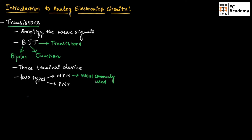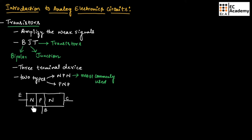If we consider the structure of a transistor, it consists of three regions. It can be NPN or PNP with three terminals known as Emitter, Base, and Collector. The NPN transistor consists of an N-layer, then a P-layer, and another N-layer. Since different types of semiconducting materials are used, junctions are formed in between, giving three terminals: Emitter, Base, and Collector.